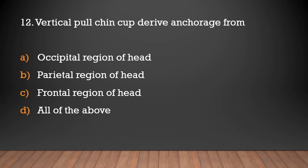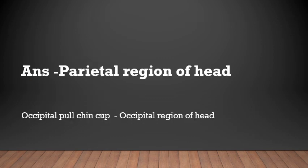Vertical pull chin cup derives anchorage from: occipital region of head, parietal region of head, frontal region of head, or all of the above? Answer: Parietal region of head. Vertical pull chin cup derives anchorage from the parietal region of the head. Occipital pull chin cup derives anchorage from the occipital region of the head.